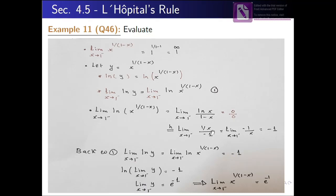Applying L'Hôpital's rule: the derivative of ln(x) is 1/x, and the derivative of (1−x) is −1. So we have the limit of (1/x)/(−1) = −1/x when x→1⁻. Replacing x by 1, we get −1/1 = −1.